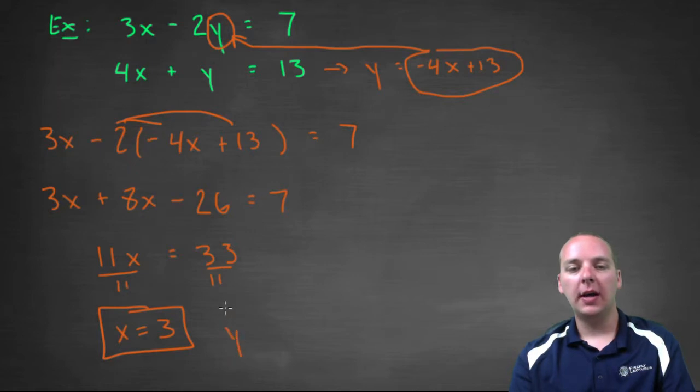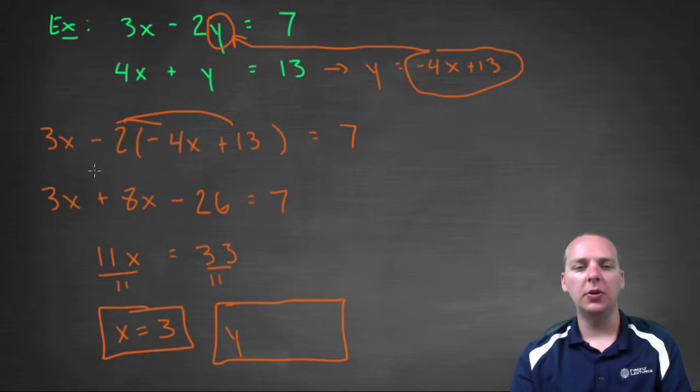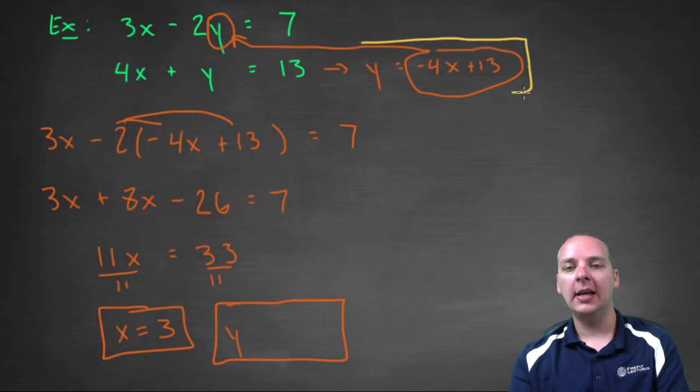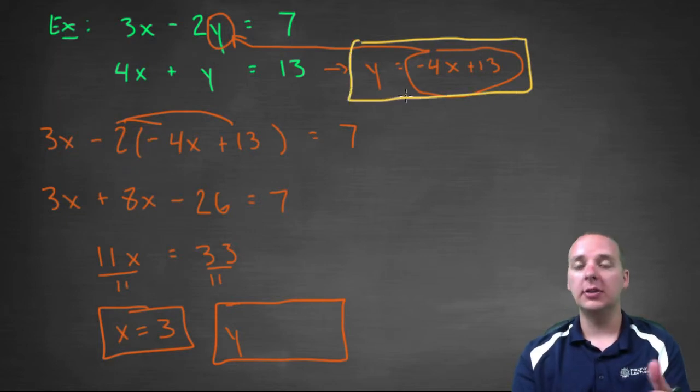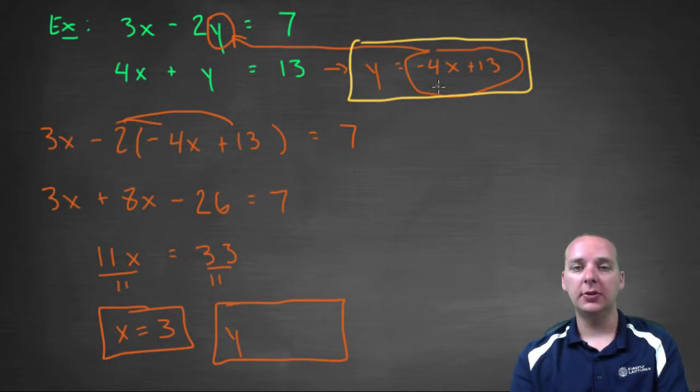For that you can go back and use any old equation, it doesn't matter, all the equations are true. You can use the first, the second, or any of the orange. I would always recommend using the guy where you solved for y, because that should be somewhere in your previous work. You just take that equation, pop in your x as 3. So -4 × 3 + 13, that'll be -12 + 13, which is 1. So y equals 1.